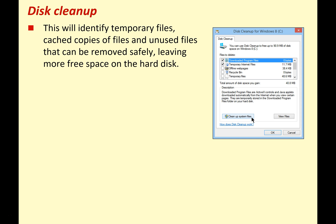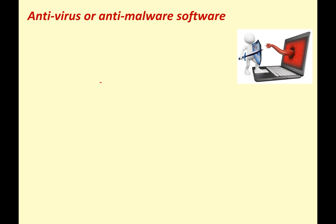Disk cleanup will identify temporary files, cached copies of files, and unused files that can be removed safely, leaving more free space on your hard drive. Over time, a lot of junk accumulates — running disk cleanup on computers used for four or five years can reveal literally gigabytes of data: temporary files, multiple copies of the same file, old Windows updates no longer needed. Getting rid of all that frees up space for your important data and programs.